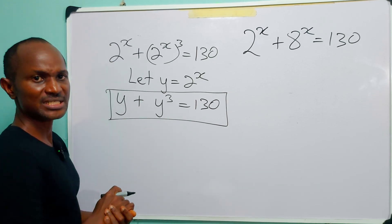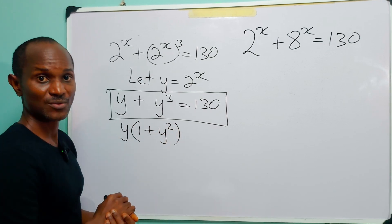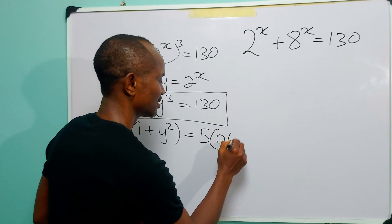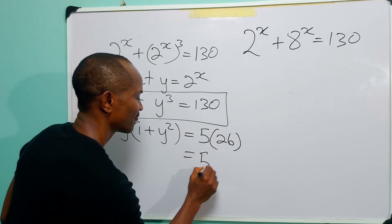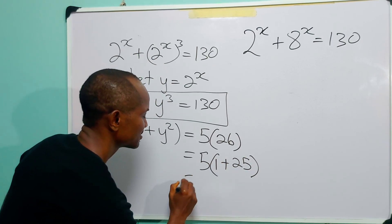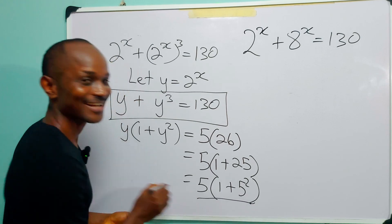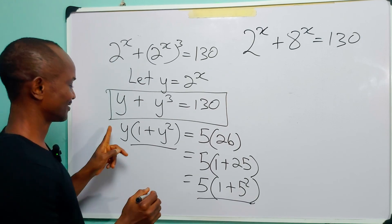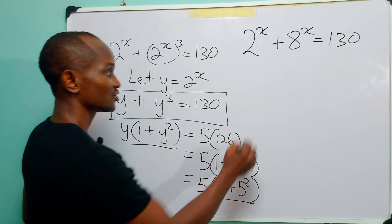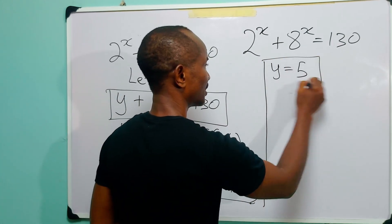Now look at the left-hand side of this equation. You can see that we can factorize, so we have y times (1 plus y squared). And realize that 130 is 5 times 26, which is 5 times (1 plus 25). Comparing the two sides — y corresponds to 5, and y squared corresponds to 5 squared — so that simply tells you by observation that y is equal to 5.